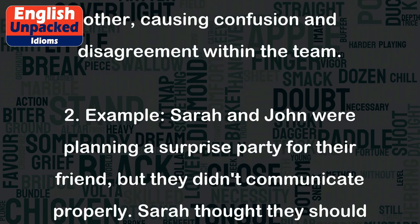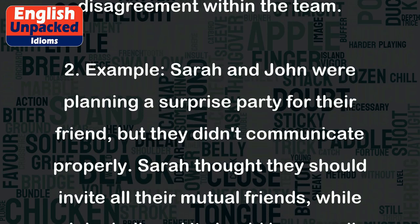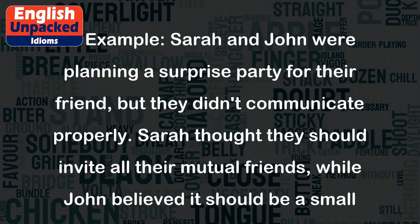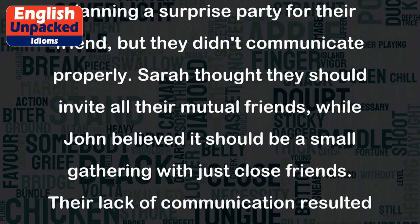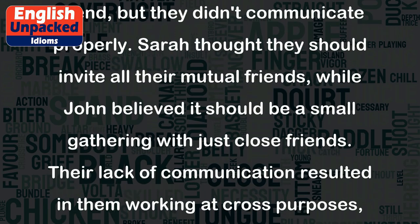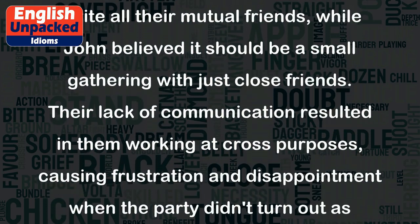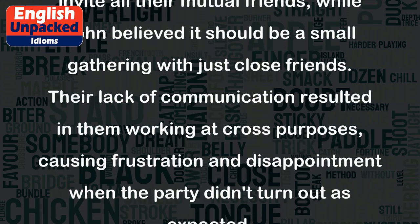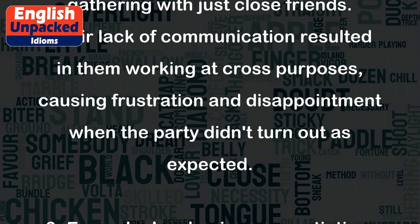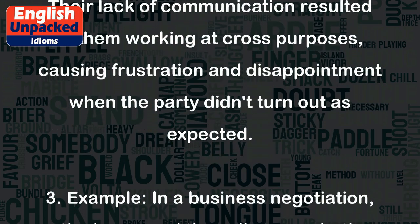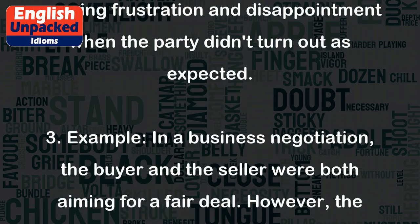Example 2: Sarah and John were planning a surprise party for their friend, but they didn't communicate properly. Sarah thought they should invite all their mutual friends, while John believed it should be a small gathering with just close friends. Their lack of communication resulted in them working at cross-purposes, causing frustration and disappointment when the party didn't turn out as expected.